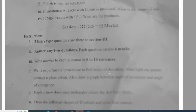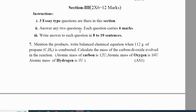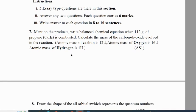From the Algonda district question paper: Write the experiment procedure to find the angle of deviation when light passes through a glass prism. Explain how a soap molecule works. This is the government model paper — mention the products and write the balanced chemical equation when 112 grams of propane is combusted, and calculate the mass of carbon dioxide evolved in the reaction.